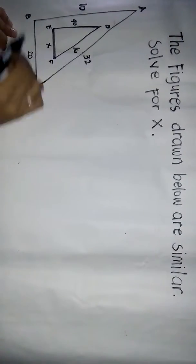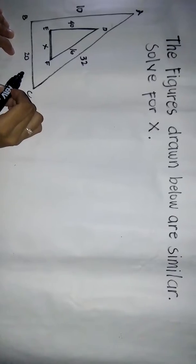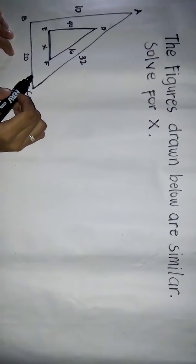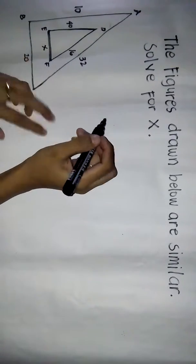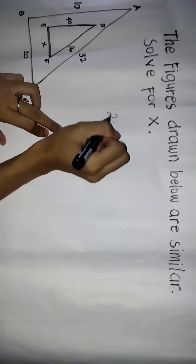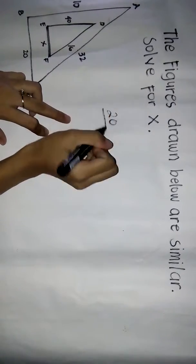First, notice that BC corresponds to EF. So we have the ratio of 20 over X.